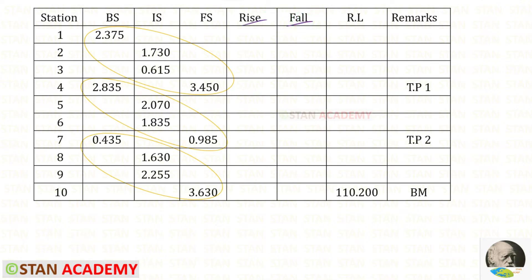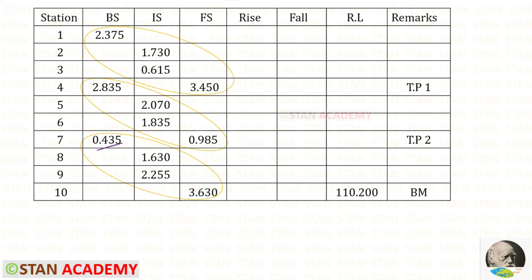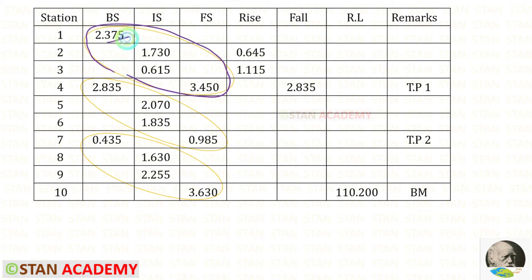Now we are going to find the rise and fall. Before finding, we can make circles like these so that it will be easy. From the backsight to the foresight we have to make the circles roughly. This is the backsight and this is the foresight, so we can make like this. This is the new backsight and this is the foresight, and similarly for the third group. To find the rise and fall, from the backsight to the foresight we have to subtract the readings one by one.